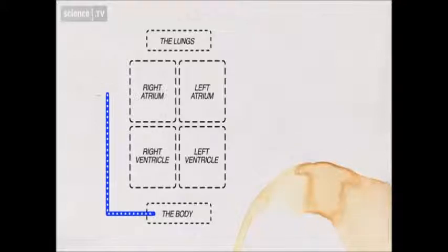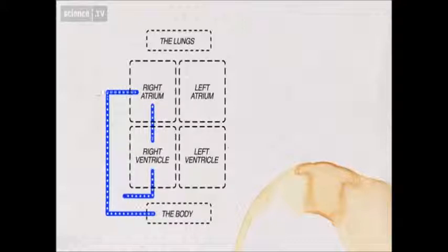The first bit of the heart it goes into is called the right atrium. This is a weak little sac that just needs to collect the blood and move it on to the next bit of the heart. And that's the right ventricle, which has the job of sending the blood up to the lungs to pick up oxygen.